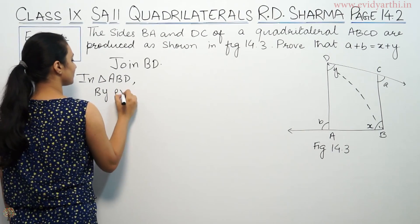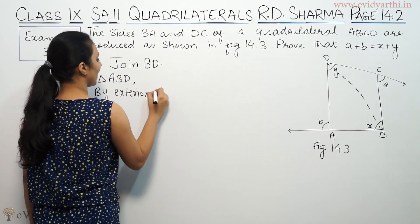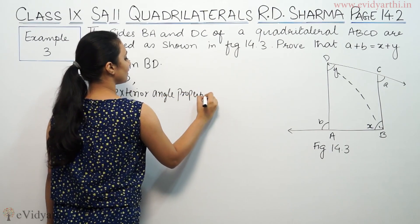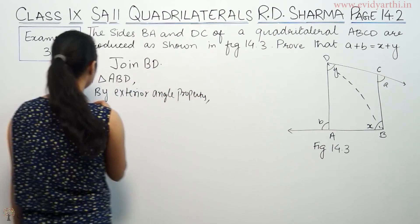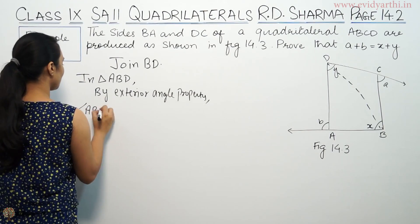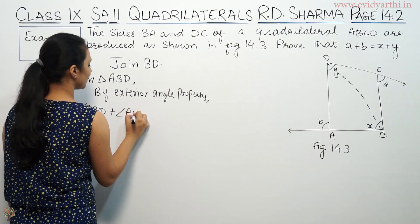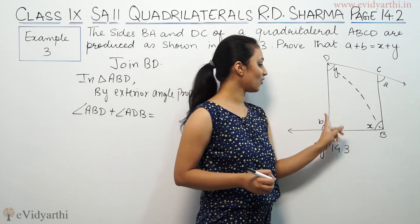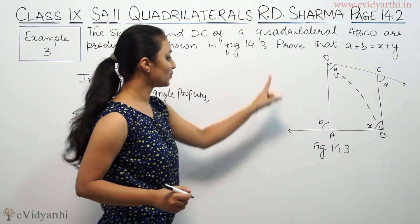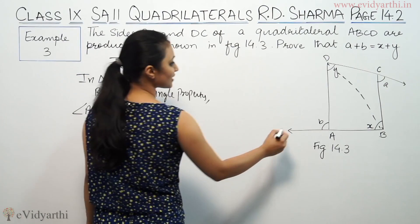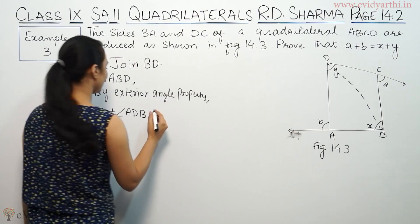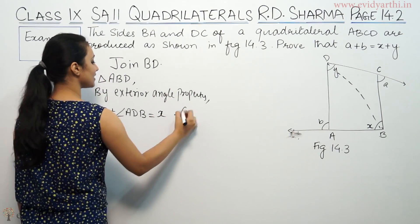By exterior angle property, angle ABD plus angle ADB. ABD or ADB is equal to DA. So this is M, or M is equal to X. This is first equation.